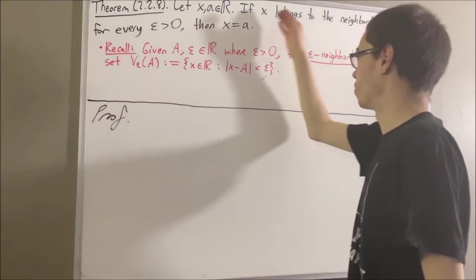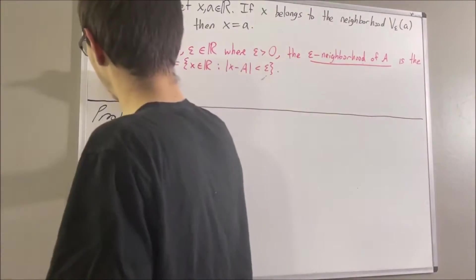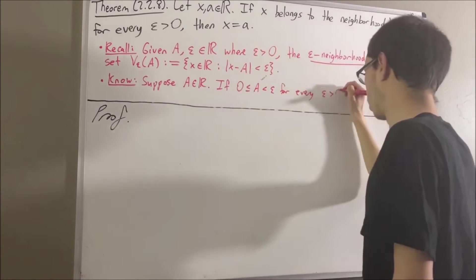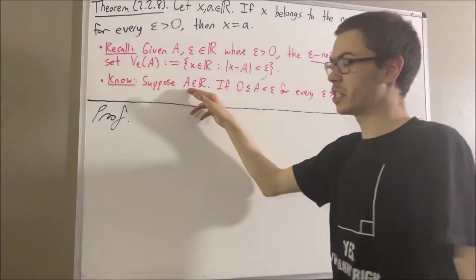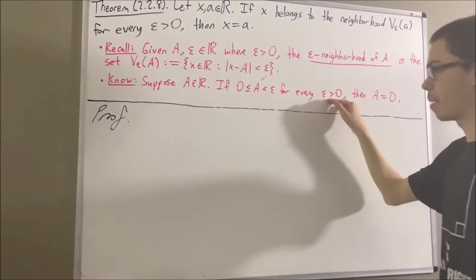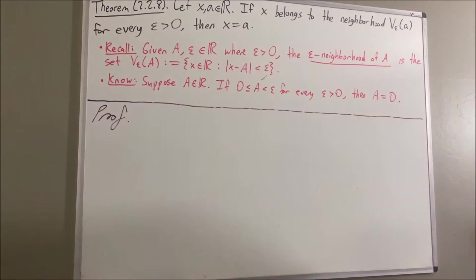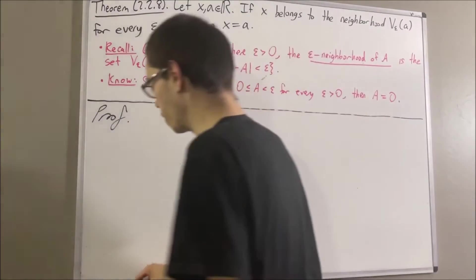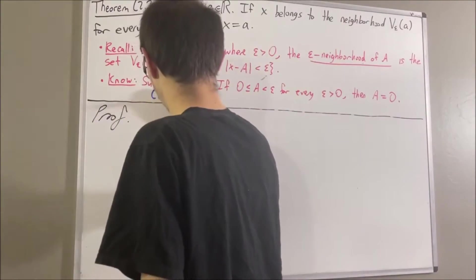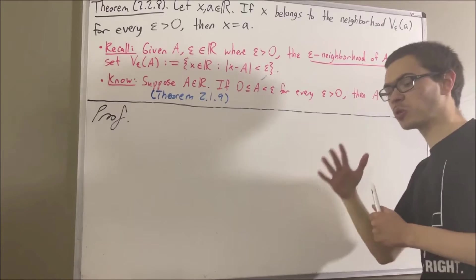In proving this theorem, we're going to rely on the following fact. Suppose a is a real number. If zero is less than or equal to a, which is less than epsilon for every epsilon greater than zero, then a is equal to zero. In the book that I'm basing this proof off, this fact is given by Theorem 2.1.9. The book is Introduction to Real Analysis by Bartle and Sherbert, fourth edition.